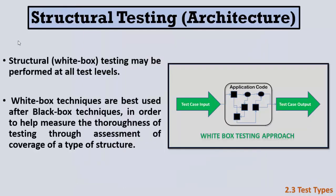After functional and non-functional testing, we have structural or white box testing. Unlike black box testing, white box testing means we give inputs to the system and look at the code — examining the paths the system goes through to perform its functions. We should use white box testing after black box testing, since black box is more important and easier, but white box finds harder bugs and leads to a better quality system.